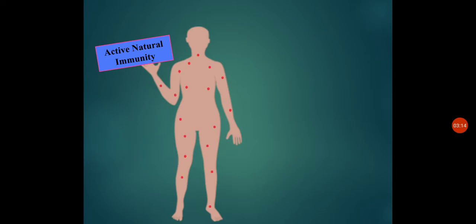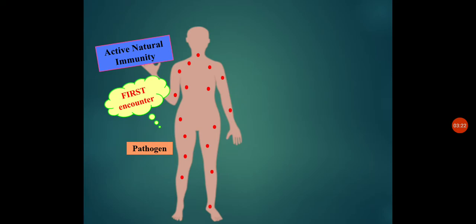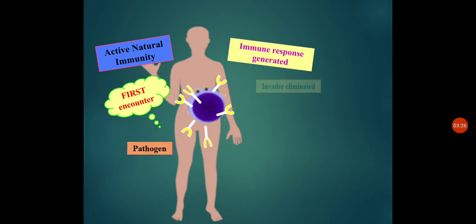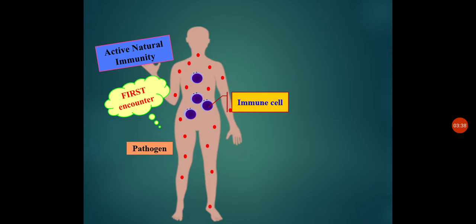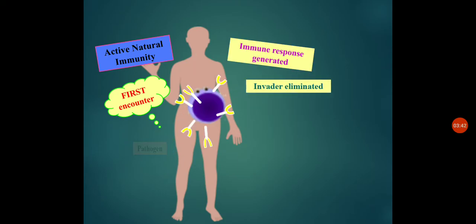In case of natural active immunity, whenever we encounter pathogens and they enter our system, our immune system mounts a response and these invaders are eliminated. When the pathogen enters, our immune cells get activated and the invaders are eliminated. However, it is a slow and weak process, and that is the reason we experience all the symptoms of the disease. The immune system needs time to prepare the antibodies required to kill these pathogens, and within that span all the disease symptoms set in.